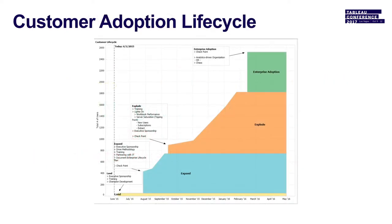I'm going to take a quick poll. This is something we use internally to analyze where customers are in their Tableau adoption lifecycle: you land, you get a server, you expand, you explode, then you get enterprise usage. The reason I put this up is because this should parallel the development of a COE process. If you're way down the adoption curve in terms of number of licenses and you're still just talking about a COE, that's probably not good. Something I definitely want to keep my eye on is where customers are and where they are with the COE.